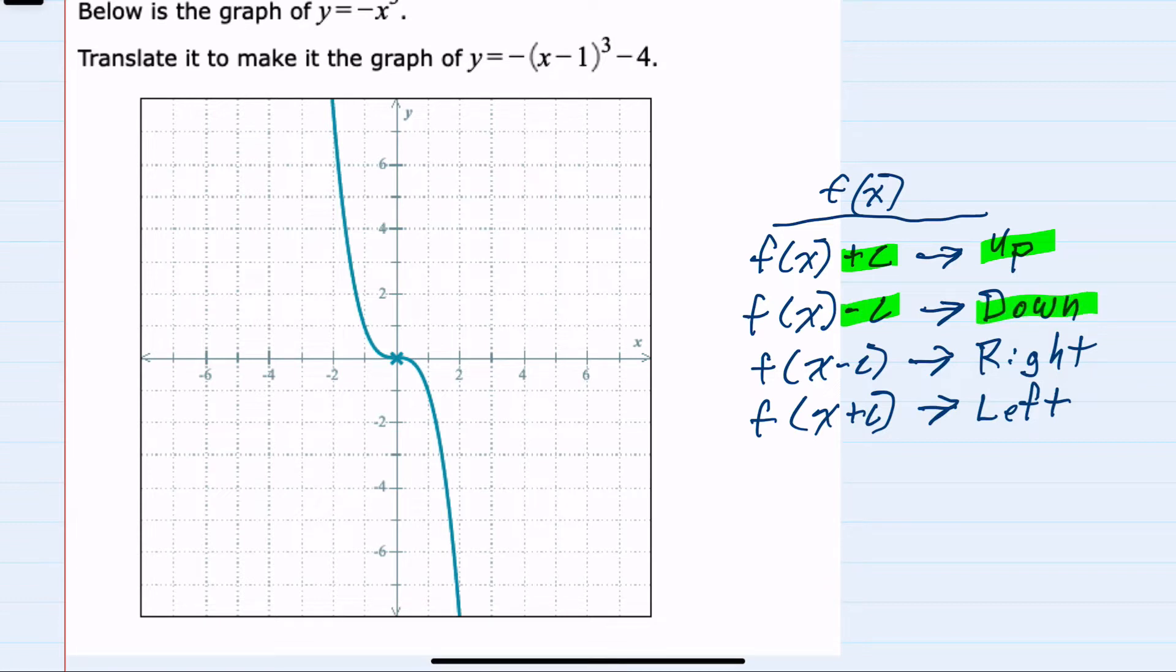When we replace the variable with the variable minus a constant, that shifts right. Replacing the variable with the variable plus a constant shifts a function left.